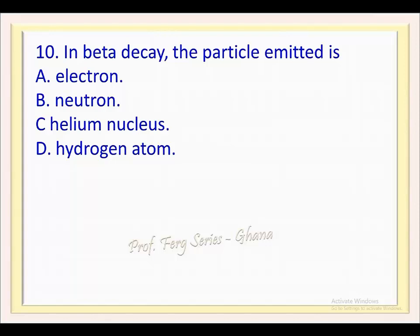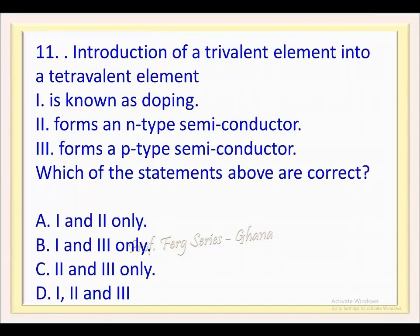Question 10. In beta decay, the particle emitted is: a. Electron, b. Neutron, c. Helium nucleus, d. Hydrogen atom. The correct answer is a.